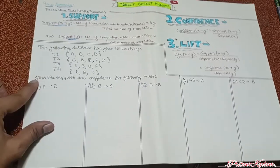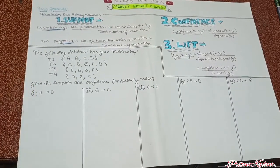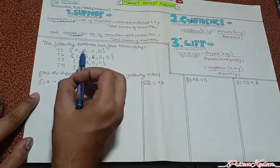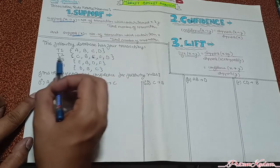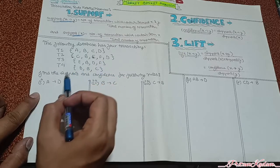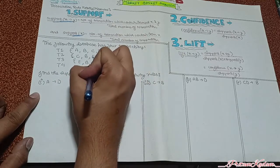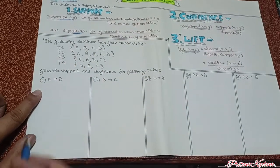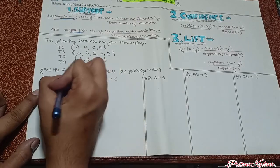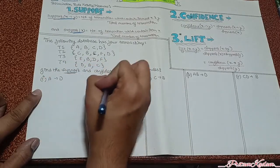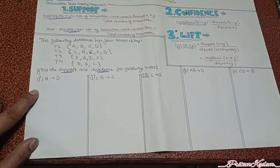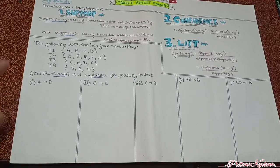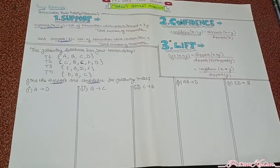Let us solve this question. The following database has four transactions: T1 = {A,B,C,D}, T2 = {C,B,E,F,D}, T3 = {E,B,D,F}, and T4 = {B,C}. We need to find support and confidence for the following item set rules. Let us start with item set {A, D}.